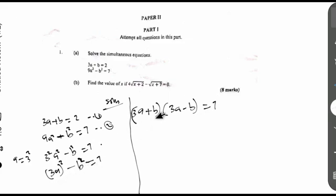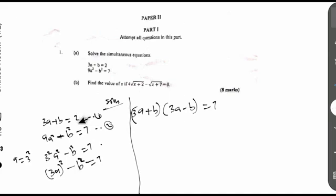This difference of two squares is expressed so that one factor is positive and the other is negative. One side should be positive while the second should be negative. Now, from equation 1, we have 3A plus B equal to 2. Looking at our factored form, the 3A plus B part is exactly equation 1, which equals 2. So we replace 3A plus B with 2.